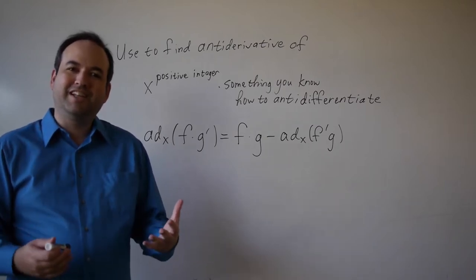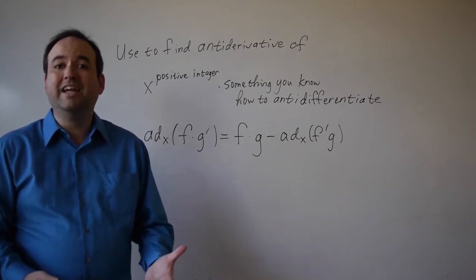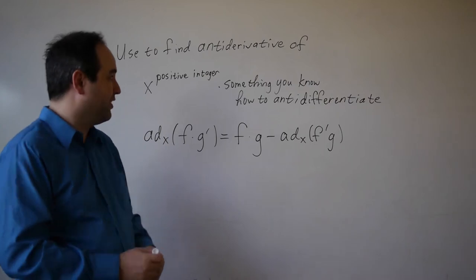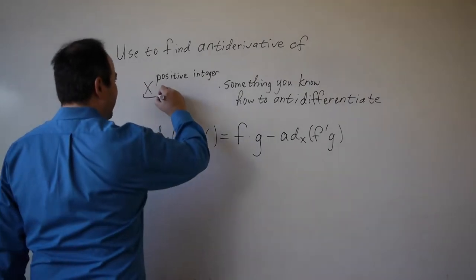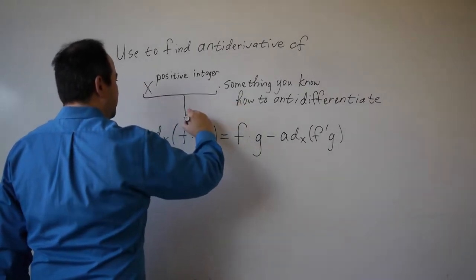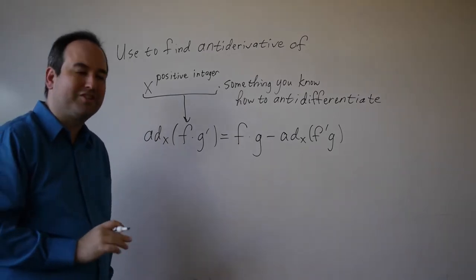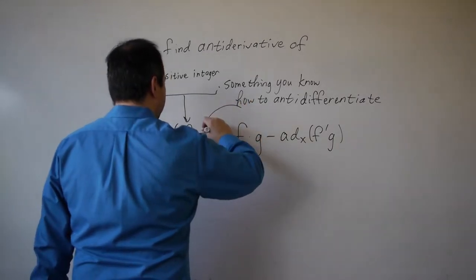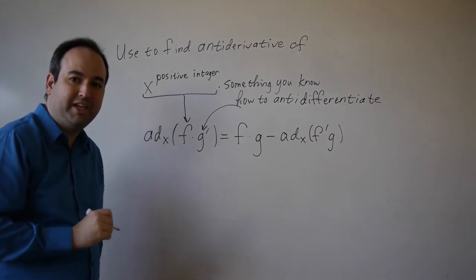When you're dealing with x raised to a power times something that you know how to anti-differentiate, the x raised to the power part should become your f, and everything else in your expression should become your g prime.